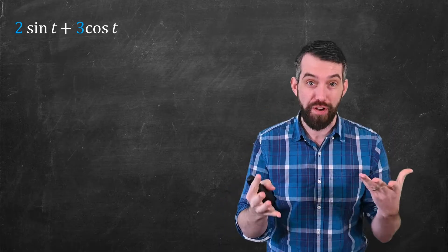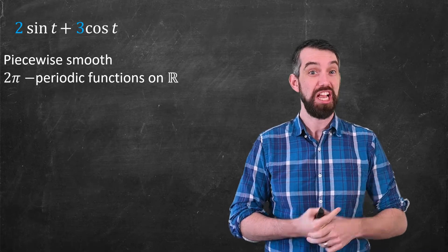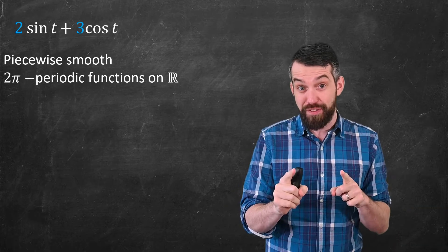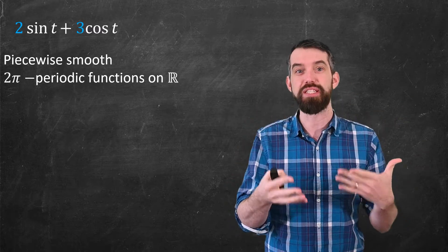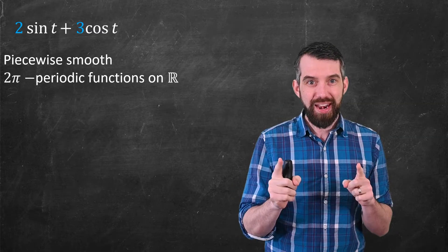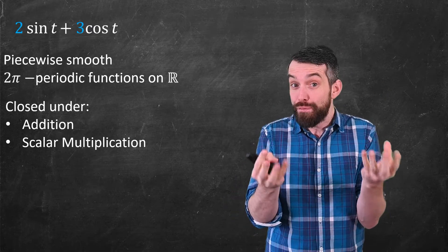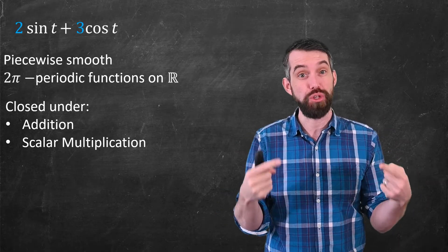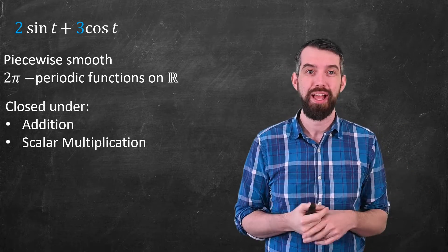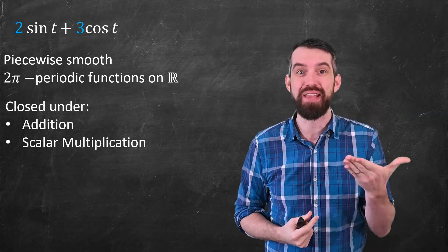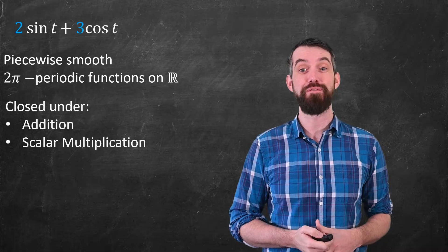If I consider not all functions, but the set of piecewise smooth 2π-periodic functions on the real numbers — of which sine and cosine are both examples — these are the types of functions we talk about when discussing Fourier series; this is the condition needed to guarantee convergence. These functions are closed under addition: adding two 2π-periodic functions yields another 2π-periodic function, and likewise under scalar multiplication. This story is pretty much the same as what we do with vectors in Rn.